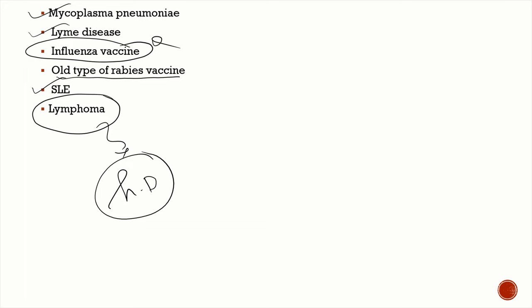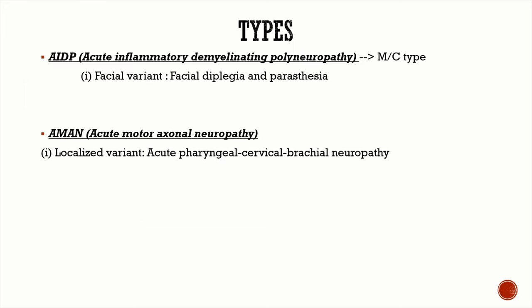There are four major types of GBS. The most commonly encountered is AIDP — acute inflammatory demyelinating polyneuropathy. A localized variant of AIDP is the facial variant, characterized by bilateral facial palsy along with paresthesia, known as facial diplegia and paresthesia.